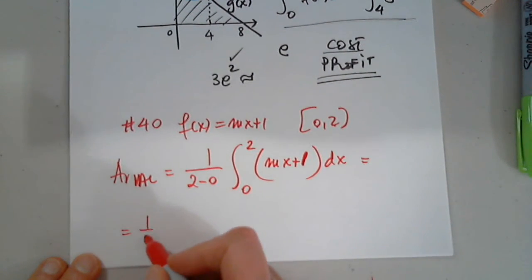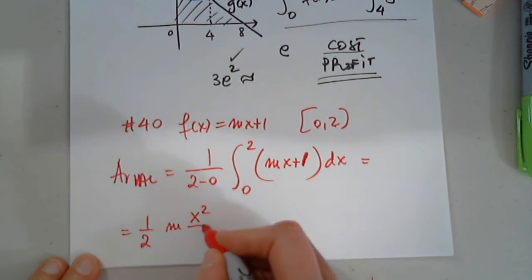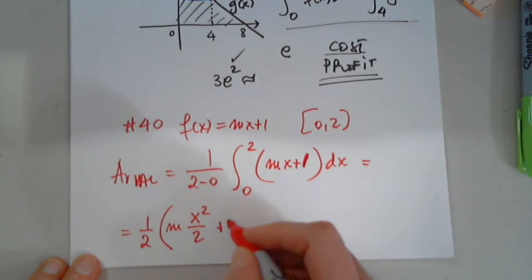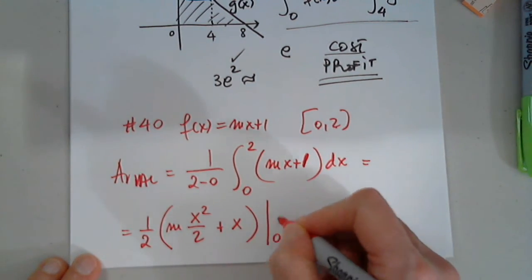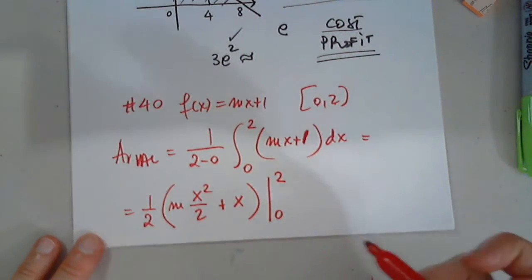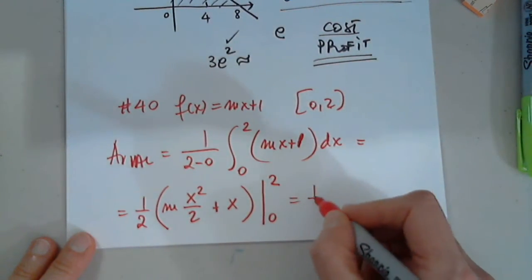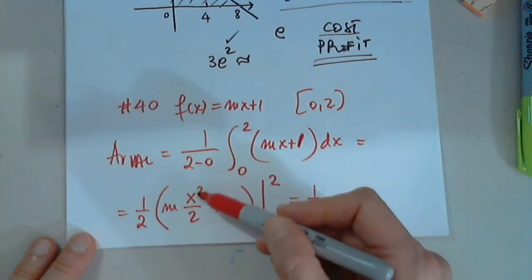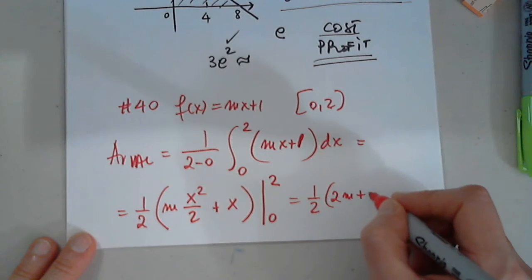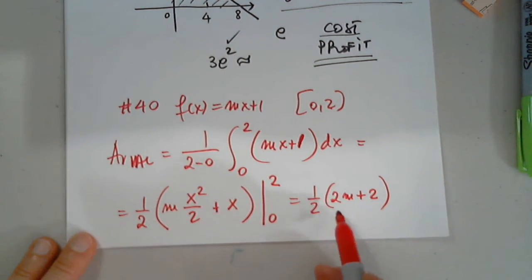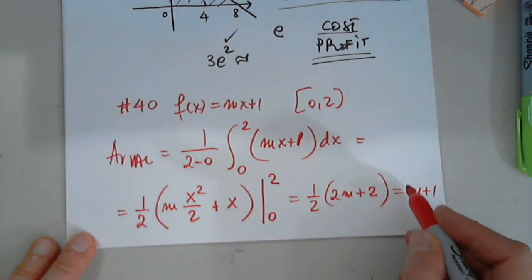The number in front is 1 half. Which function prime is mx? Of course, it's mx squared divided by 2. Which function prime is 1? That is x. And we evaluate from 0 to 2. When I plug in 0, it's 0, so it's 1 half. When I plug in 2, 4 divided by 2, that would be 2m plus 2. Yes, I will distribute because I noticed that the answer would be m plus 1.